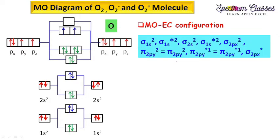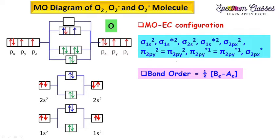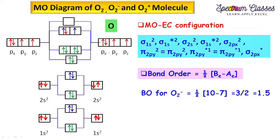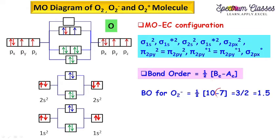Coming to bond order. Bond order equals one-half times (number of electrons in bonding molecular orbitals minus number of electrons in antibonding molecular orbitals). For O2 minus: electrons in bonding MOs are 10, electrons in antibonding MOs are 7 — that is 2 plus 2 equals 4, plus 3, equals 7. On subtraction, we get 3 by 2, which gives bond order of 1.5 for O2 minus.